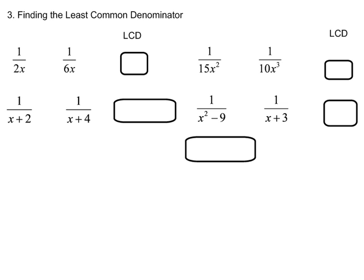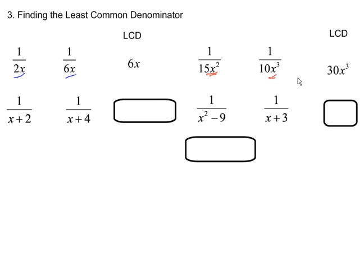Let's practice finding least common denominators. For 2x and 6x, the least common denominator is just 6x. For 1 over 15x squared and 1 over 10x cubed, the least common multiple of 15 and 10 is 30, and then you take the higher of the two exponents, so the least common denominator is 30x cubed.